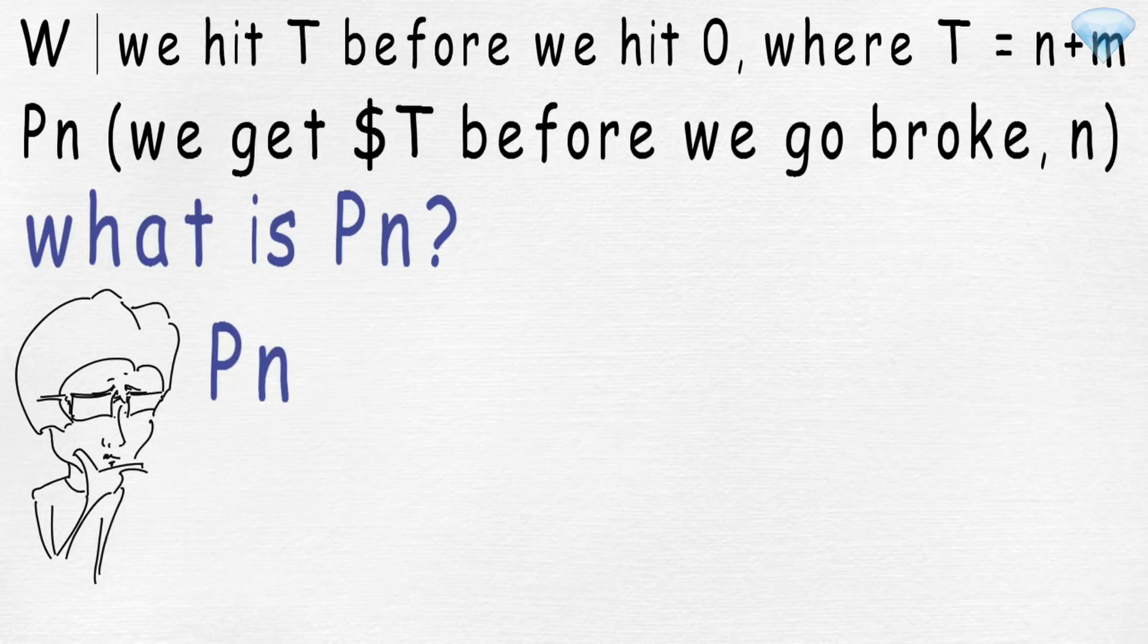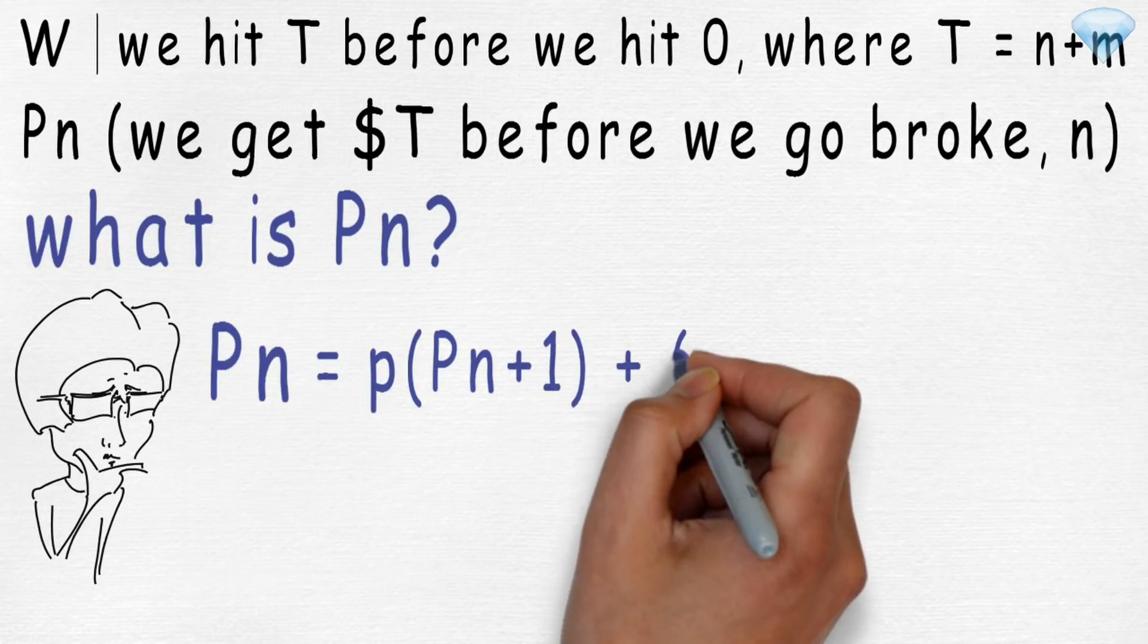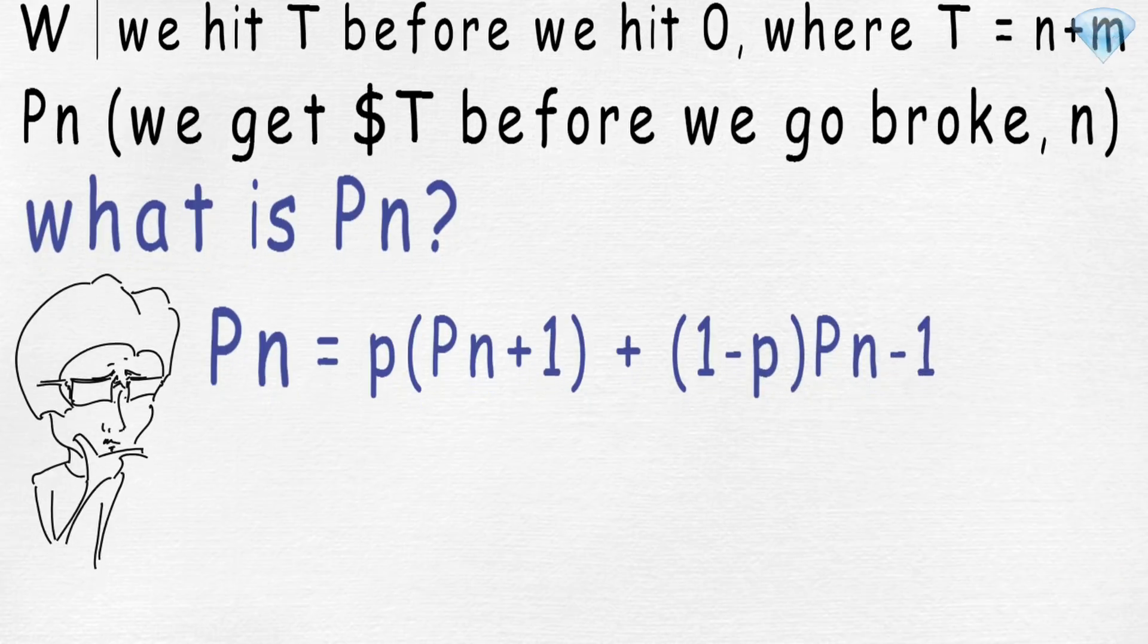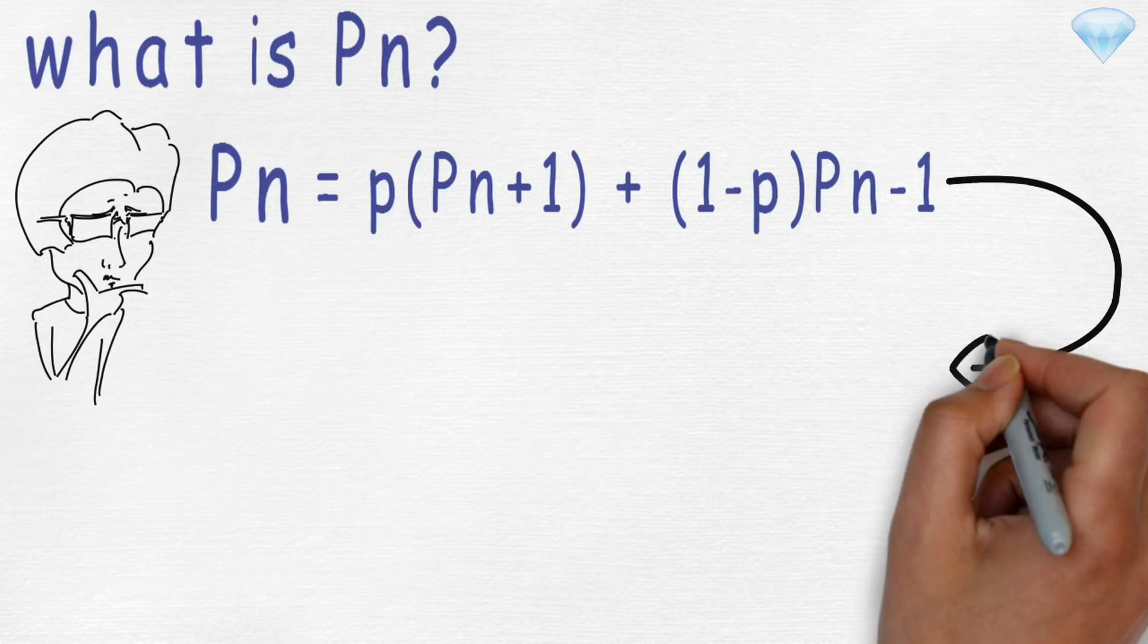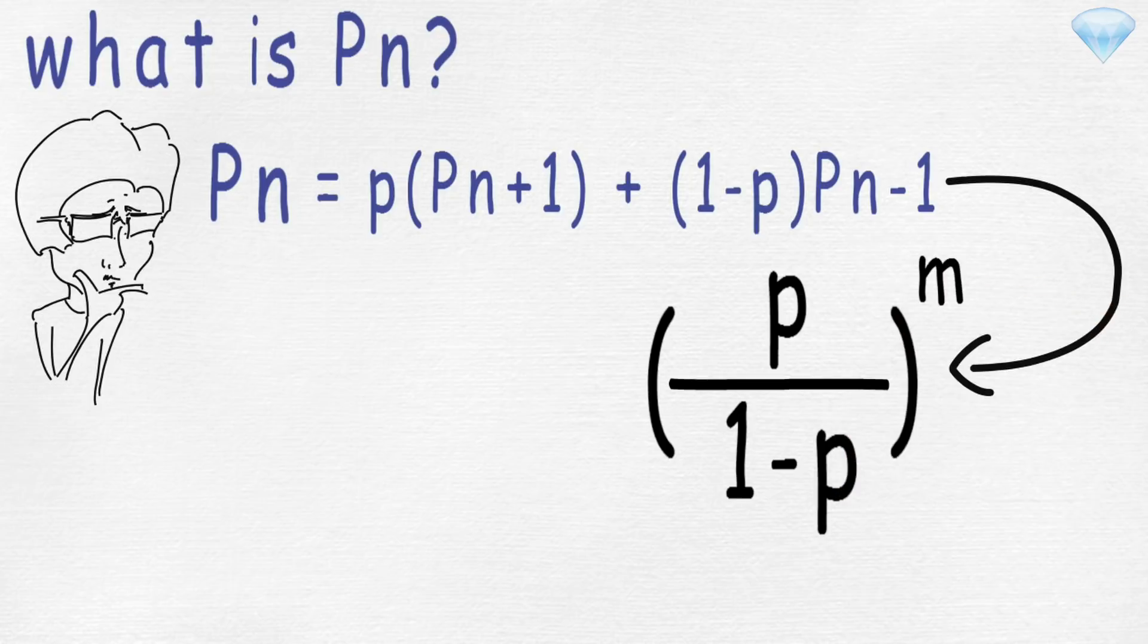The p(n) is just a simple expected value, where p(n) equals probability of success multiplied by the value of up move plus probability of failure multiplied by the value of down move. We can simplify this formula into this formula, where p(n) equals p divided by 1-p to the power m. I'm not going to prove this because no one will understand it anyway. In this case, you will just have to trust me.